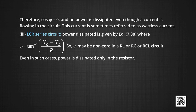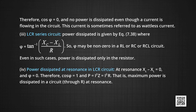Case 3: LCR circuit. Power is dissipated at phase angle φ = tan⁻¹[(X_C − X_L) / R]. φ may be non-zero in RL, RC, or LCR circuits, but even so power is dissipated only through the resistor. At resonance in an LCR circuit, X_C − X_L = 0, meaning X_C = X_L, so φ = 0 and cos φ = 1. The power is then P = I²Z = I²R — maximum power dissipated in the circuit through R, which is the condition for resonance.